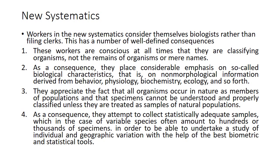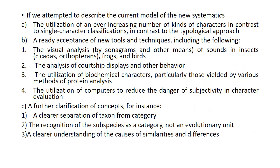For variable species, statistically adequate samples may amount to hundreds or thousands of specimens, in order to undertake a study of individual and geographic variation using the best biometric and statistical tools. The current model of the new systematics involves the utilization of an ever-increasing number of kinds of characters, in contrast to the single-character classification used in classical taxonomy. Various ways to analyze populations have been introduced, such as visual analysis by sonograms to interpret differences in sounds of insects, frogs, and birds, and the analysis of courtship displays and behavior — ethology has played a very important role.